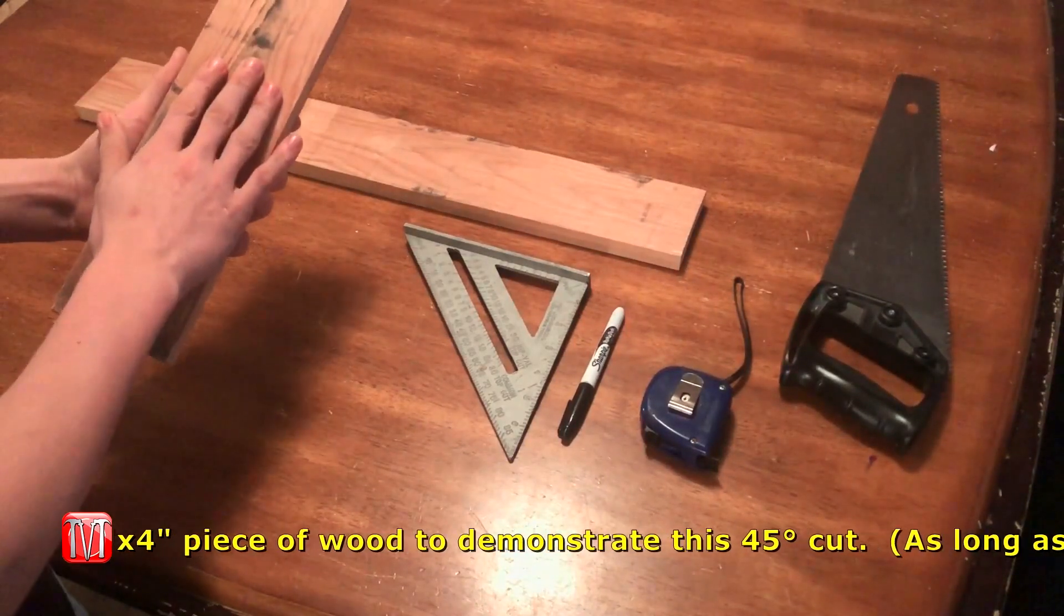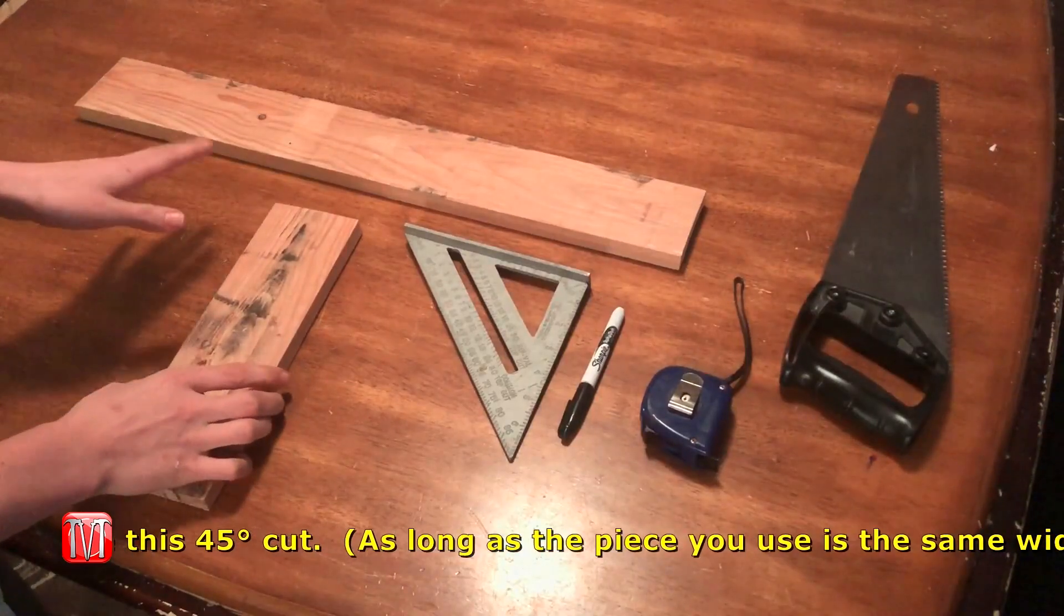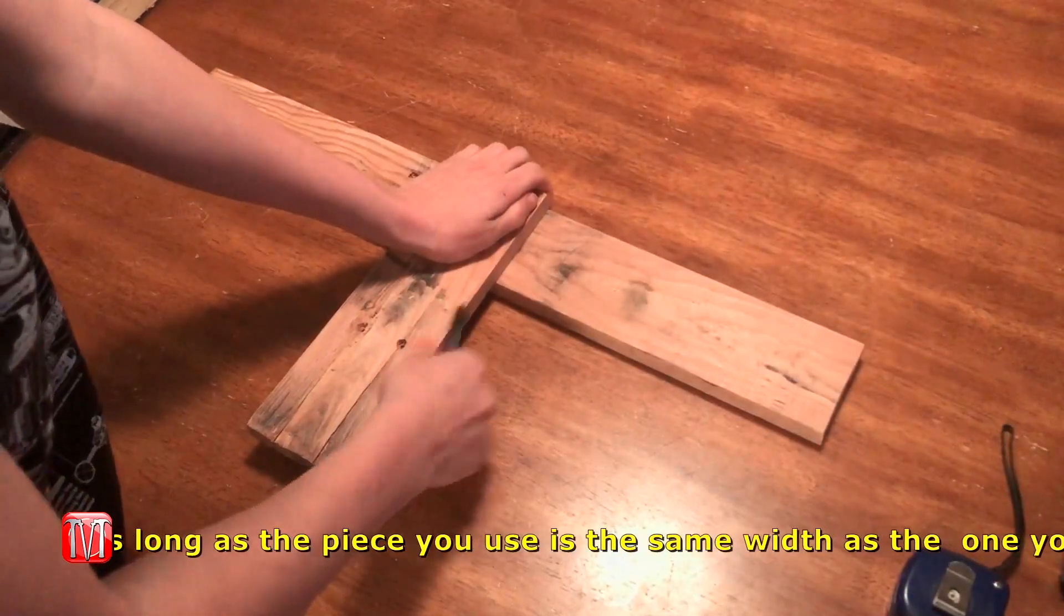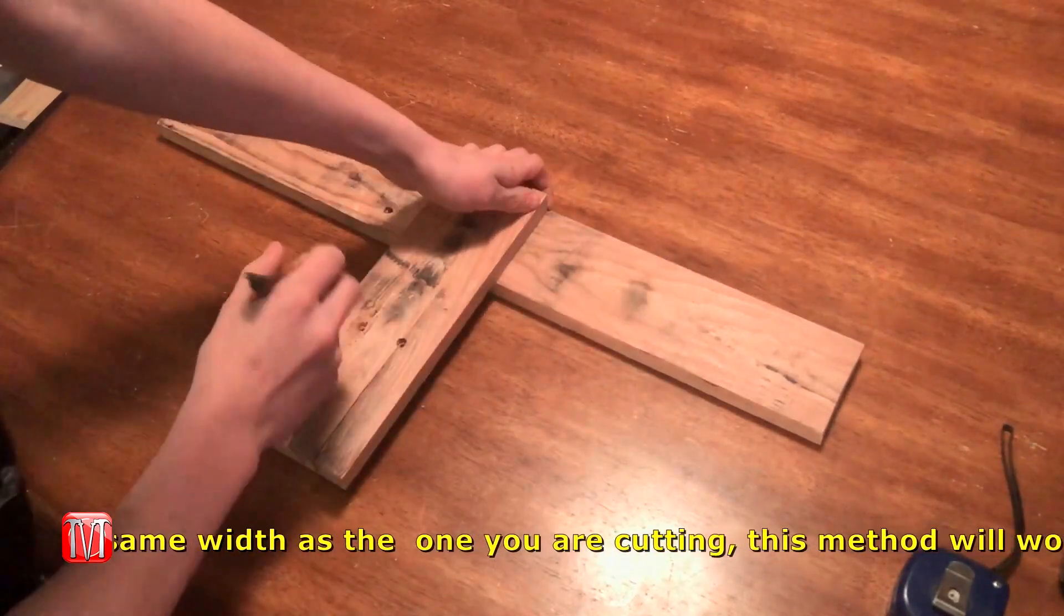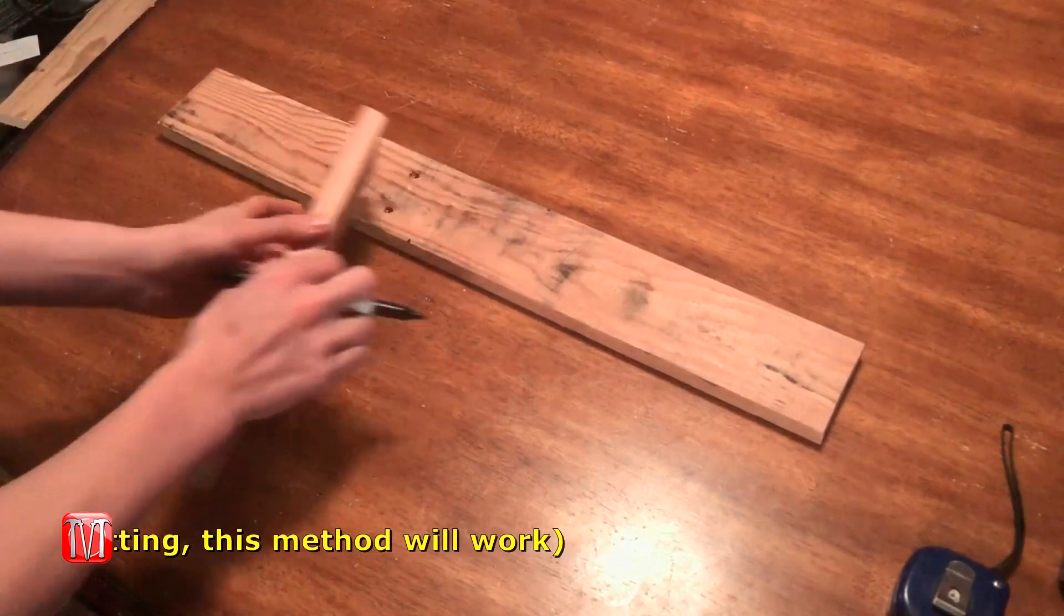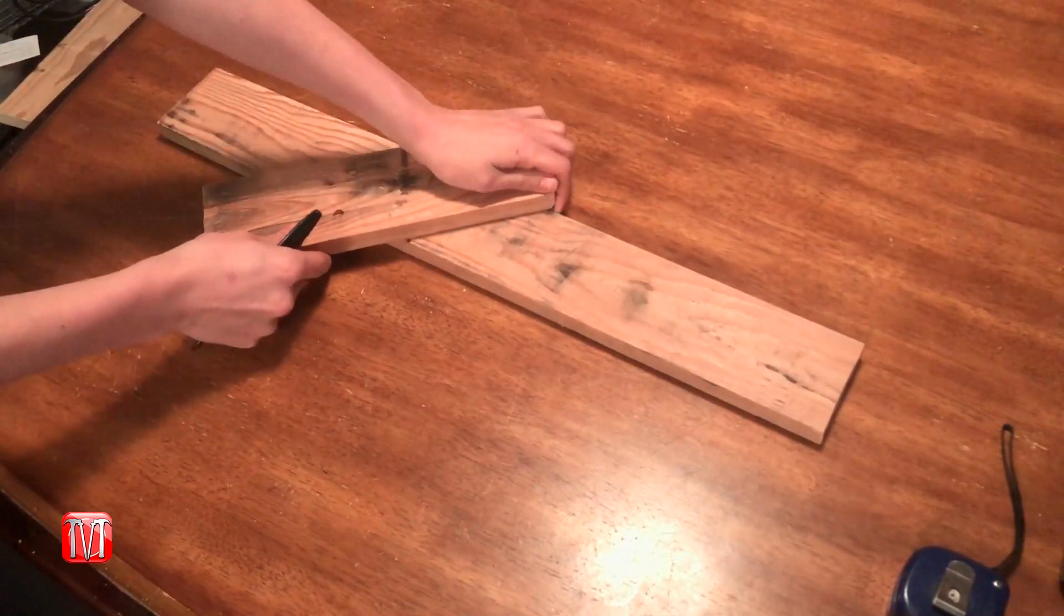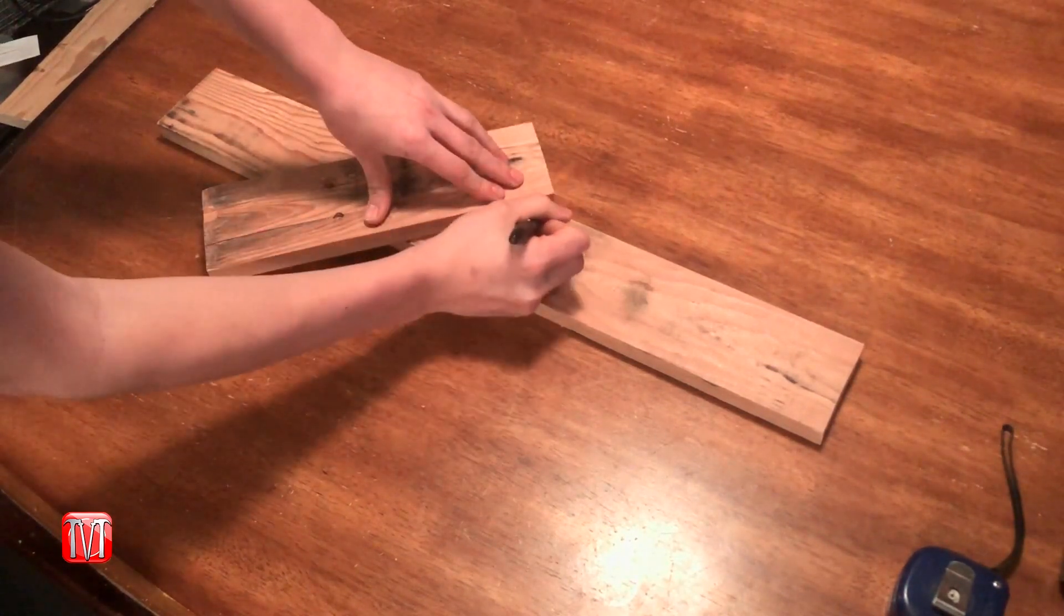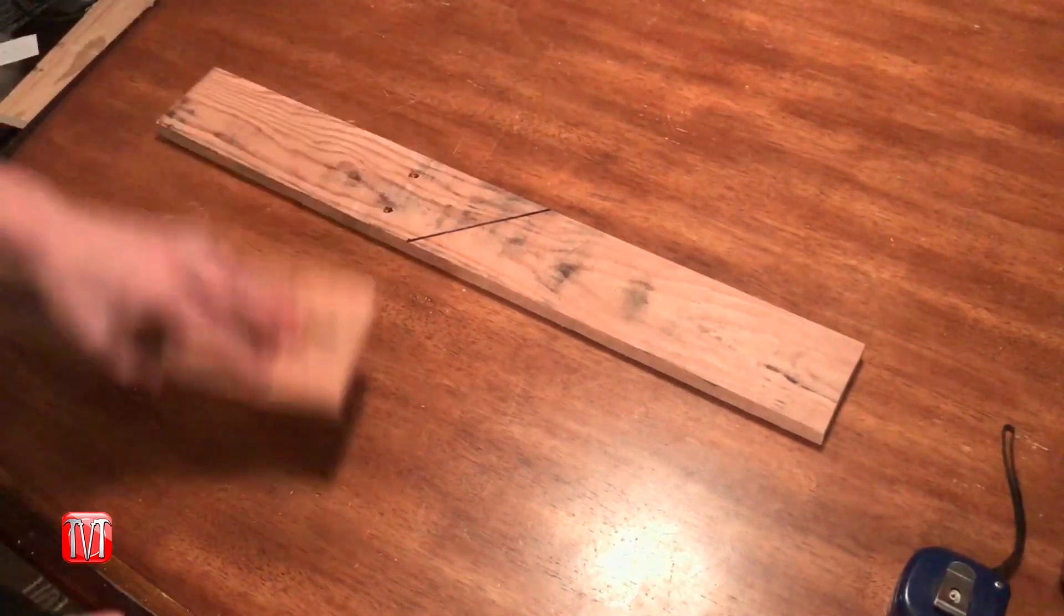You can use a piece of material that is the same width as the piece that you're going to cut. Line it up flush, take your marker, and mark this corner and this corner. By doing that, you'll have the distance you need to travel to create the 45 degree angle. There you go, you'll have a 45 degree angle.